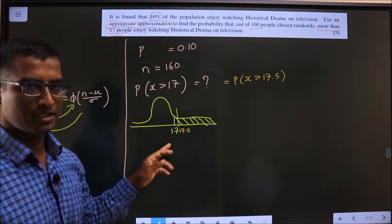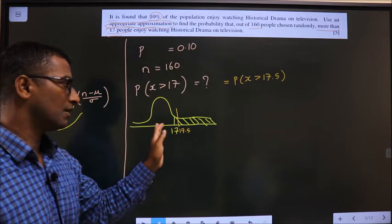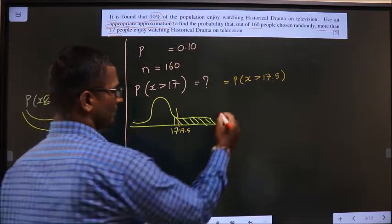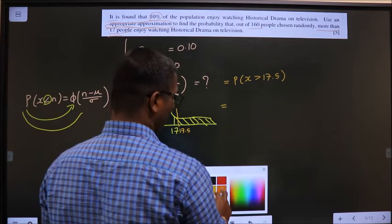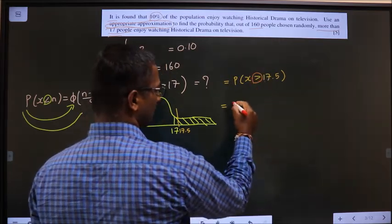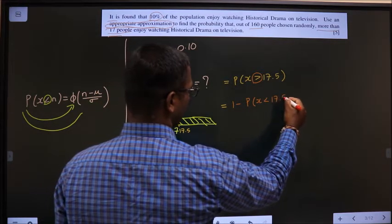How you have to do? Did you understand? This side area you have to find, so move this bar to the right side. Here the symbol is greater than. To make the symbol less than I have to do 1 minus P of x less than 17.5.